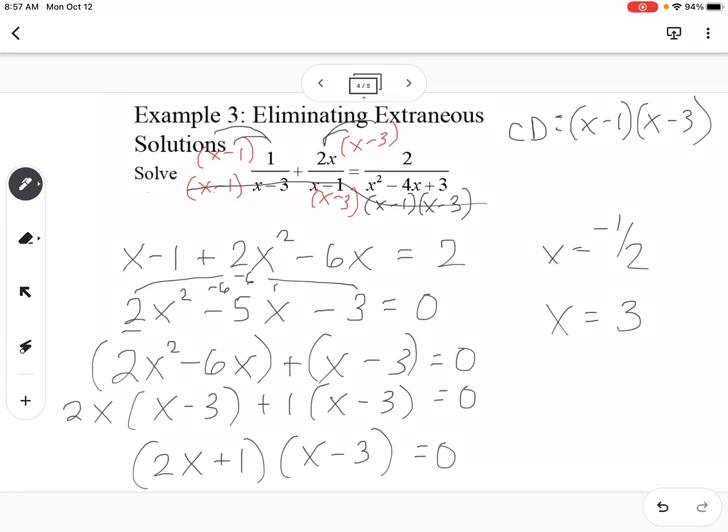Now again, before we say this is my final answer, I need to go back to the original equation and figure out if I plug in a negative 1 half or a 3, is it going to cause a problem? So if I look at all the x values, if I plug in a negative 1 half, not a problem. If I plug in a 3 right here, that's going to cause me to divide by 0. So that means that 3 is extraneous, and our only solution to this problem is negative 1 half.